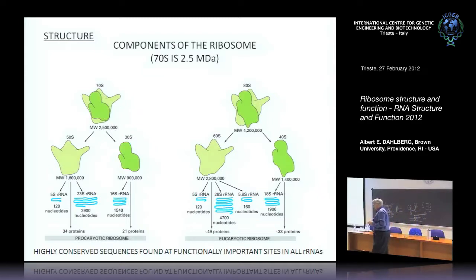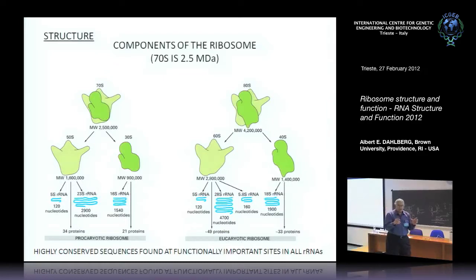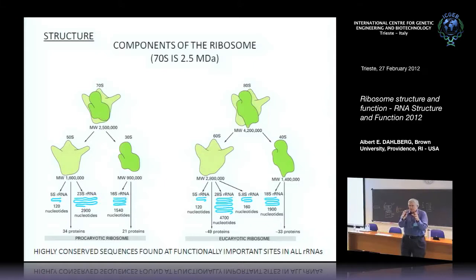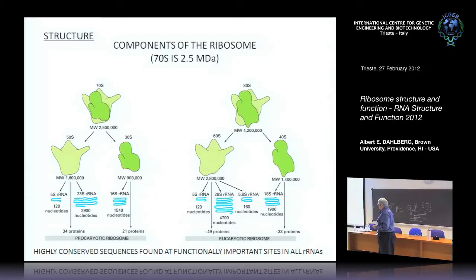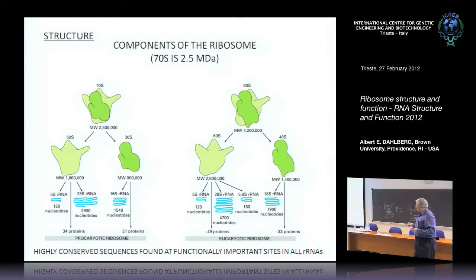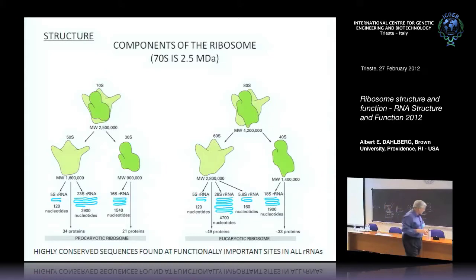There are highly conserved sequences, but differences as well. The ribosomal RNAs in eukaryotic cells are bigger, but that doesn't mean they have a much different structure. They have the same basic core structure, except at the ends of hairpin loops they have extension sequences—that's how they get bigger. There are about 54 or 55 proteins in bacteria and close to 80 in the eukaryotic ribosome, but highly conserved sequences are found at important functional sites.